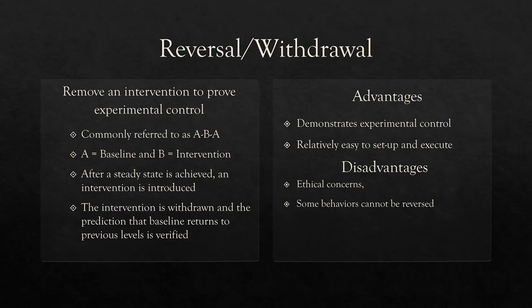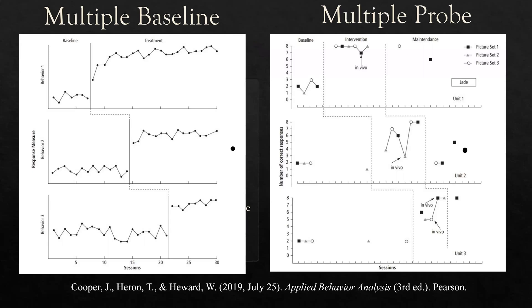For the exam, you want to know the advantages, disadvantages, and what it looks like when we combine different types of experimental design. Next, multiple baselines and multiple probe. In multiple baseline design, we have our sessions and response measures with three different baselines. The key characteristic is that our intervention starts at different times. For one baseline, it might go for seven data points, and then treatment starts, while baseline continues in the other conditions. We're slowly implementing the interventions across these other segments to prove experimental control.